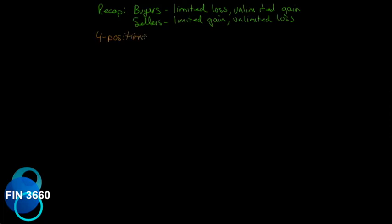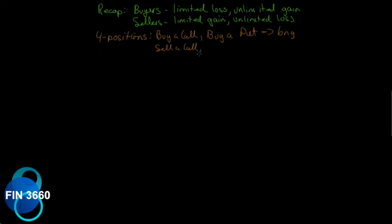We have four positions: we can buy a call, which gives us unlimited gain, or we can buy a put, which also gives us unlimited gain. Buying options are long positions — don't confuse buying a put with a short position just because it's a downward bet. We can also sell a call or sell a put; these are short positions. Long and short refer to buying and selling the option, not the type of option.